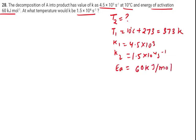So according to the data which is given in the question, we need to use a formula: log K2 divided by K1 equals to activation energy divided by 2.303 gas constant, 1 upon T1 minus 1 upon T2.